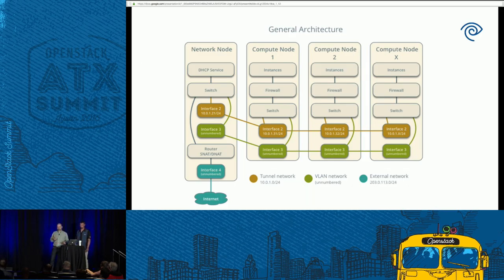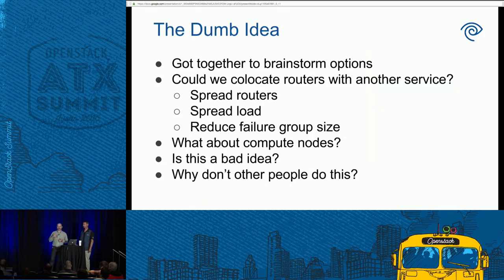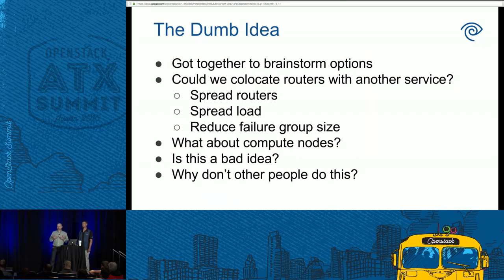Going to more than three network nodes seemed like a requirement to get any improvement. But even if we went to five or ten, we'd be wasting valuable resources that could be used for customers in other ways. Dedicated network nodes still seemed like the leading option, mostly because we were having a hard time coming up with other ideas. We got together to brainstorm and one thing we started wondering was whether we could co-locate virtual routers with some other service instead of control node services, to spread routers around and reduce failure group size.